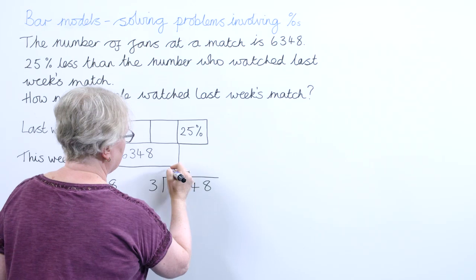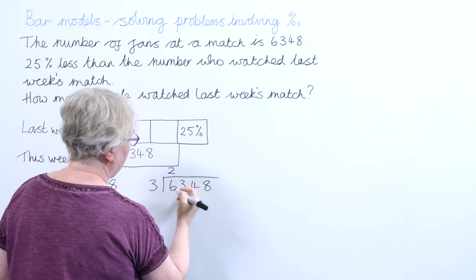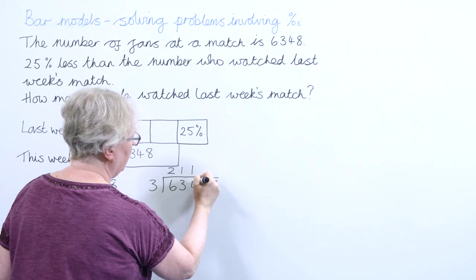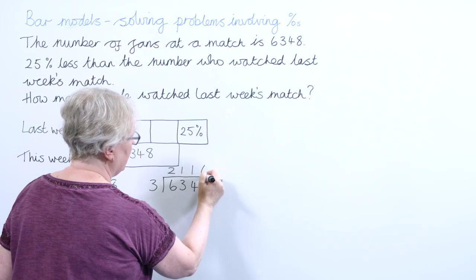So I've got 3s into 6 go twice, 3s into 3 go once, 3s into 4 go once remainder 1, 3s into 18 will go 6.